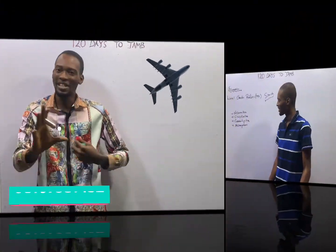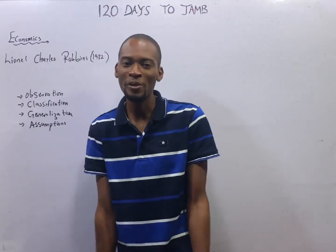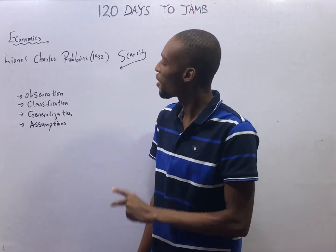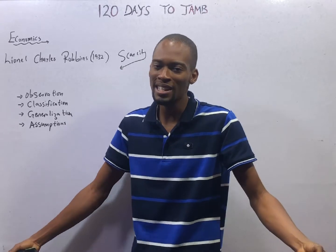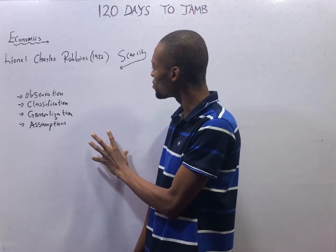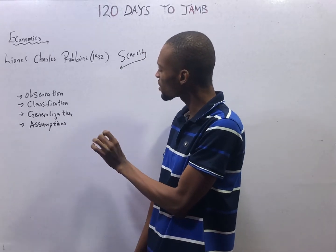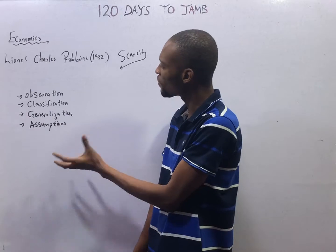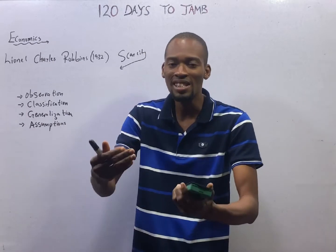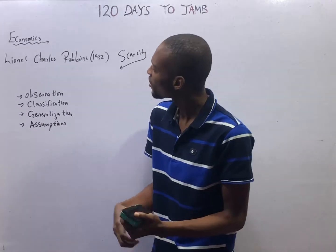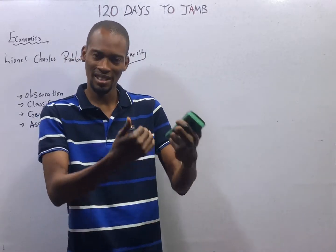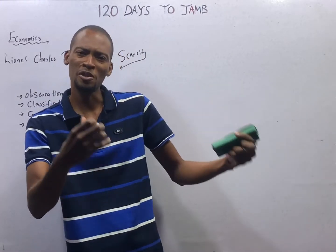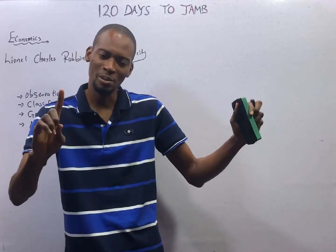Ladies and gentlemen, it is time to take off. You are welcome to the second episode of 120 Days to Jump Economics with Flash Isaac. This episode requires us to have a strong background of economics — the real meaning of economics — and also to understand the difference between equations, expressions, and how to solve basic equations in economics.